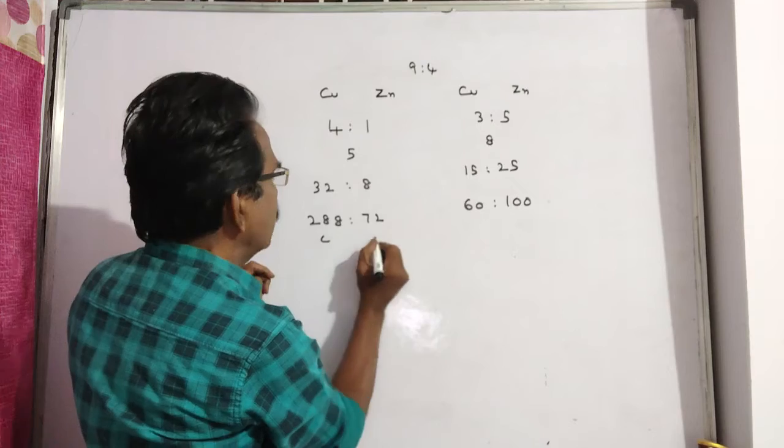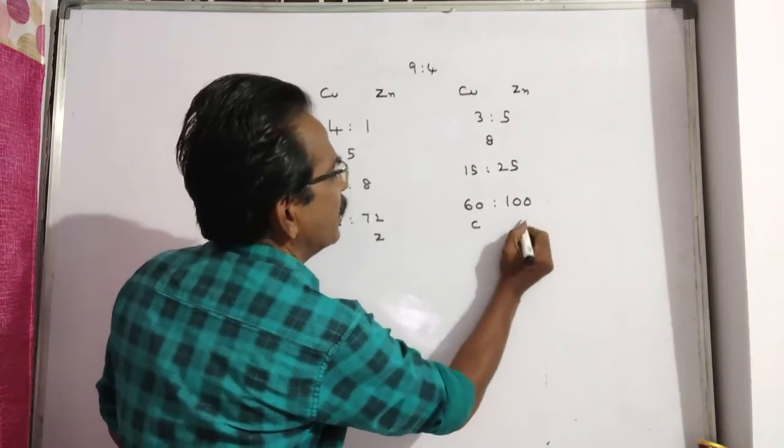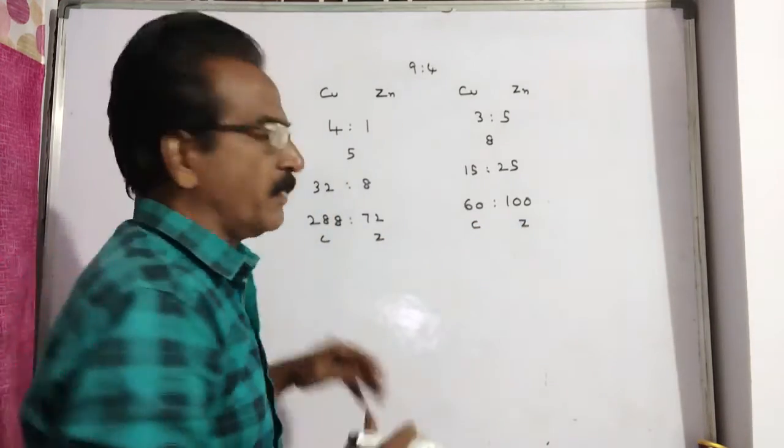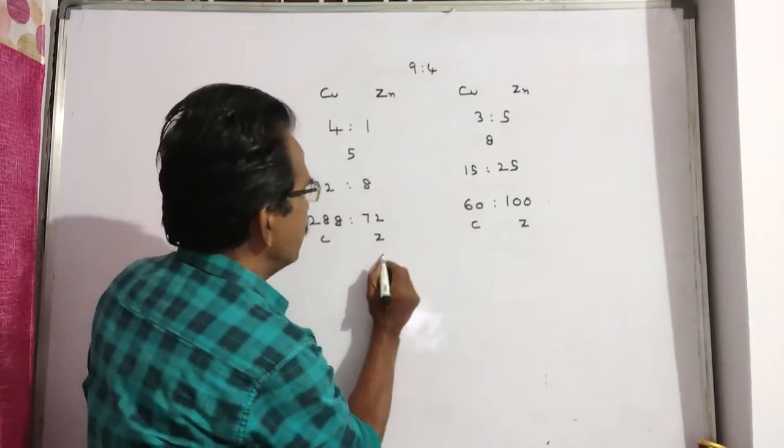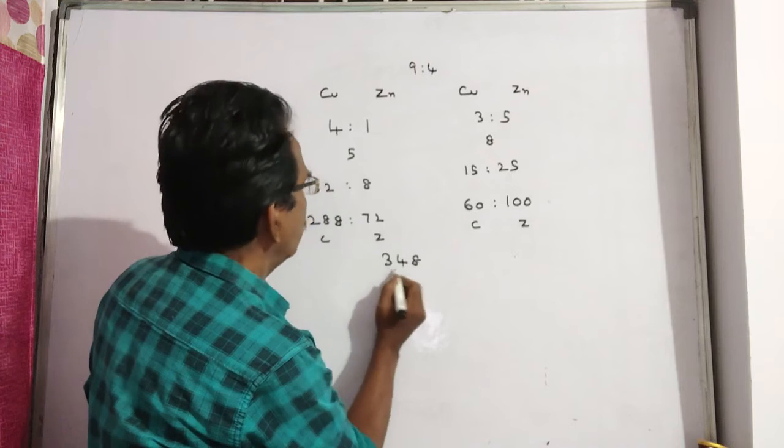Now this is copper, this is zinc. This is copper, this is zinc. Now if these two quantities are mixed, copper plus copper: 288 plus 60 equals 348.